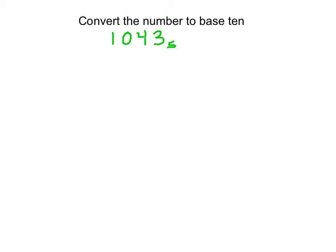When converting a number from another base to base 10, first determine what base you're in — the subscript at the end tells you this. That base tells you by what power we're increasing each place value. In base 5, we have the ones place, the fives place, the twenty-fives place, the one-twenty-fives place, and so forth. I suggest first writing out what each column's place value represents.